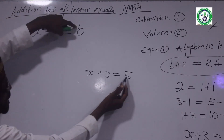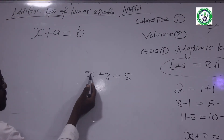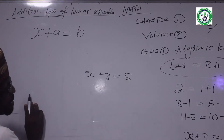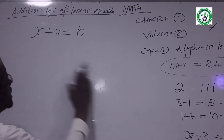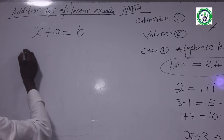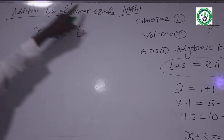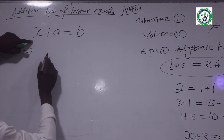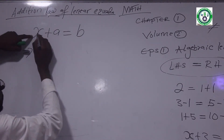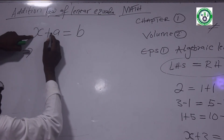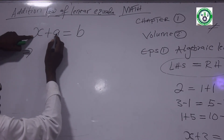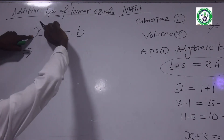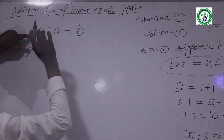X plus 3 equals 5: x is a certain unknown number. If I add 3 to it, I get 5. This is how we find the answer in algebra linear equation. What number, when I add 3 to it, gives 5? The number that x represents — we add it to 3 and get 5 on the right hand side.